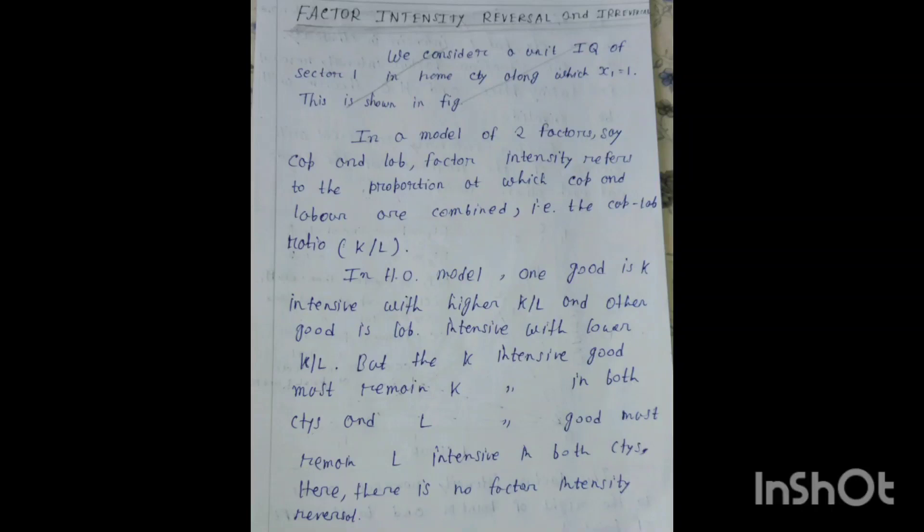Today our topic is factor intensity reversal. This is a topic within the Heckscher-Ohlin model. According to the Heckscher-Ohlin model, there are two factors of production — capital and labor — and there are two types of goods: capital intensive goods and labor intensive goods.